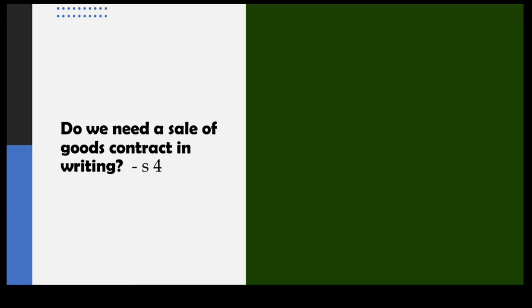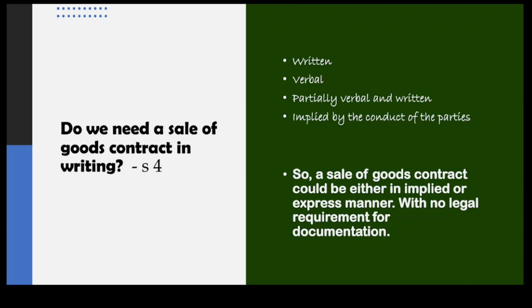How do we make a sale of goods contract? You can make it written, yes, but you can also make it verbal or implied. That means we can make a sale of goods contract without paper documentation, without signatures.